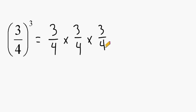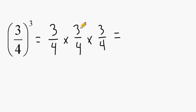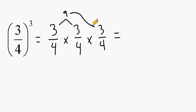Now that we have written our problem in expanded form, just multiply the numerators together to get your numerator, and then multiply the denominators together to get your denominator. So we are going to start with 3 times 3, which is 9, and 9 times 3 is equal to 27.